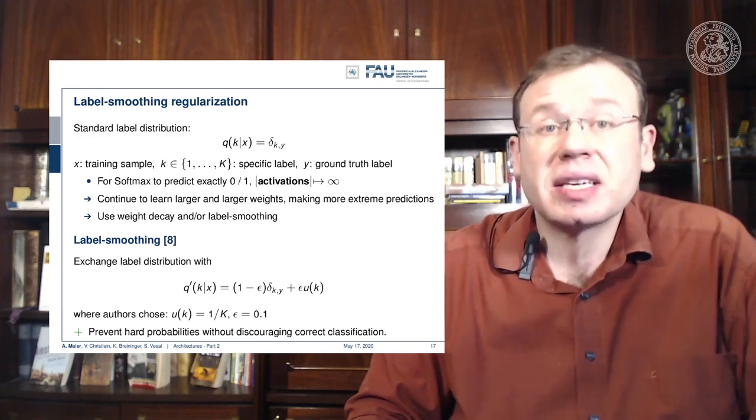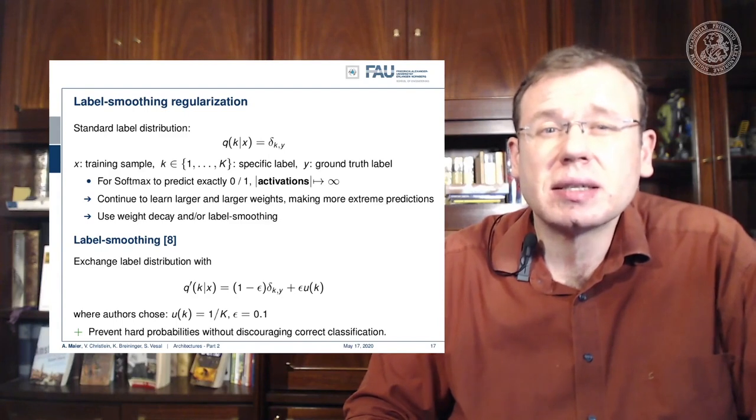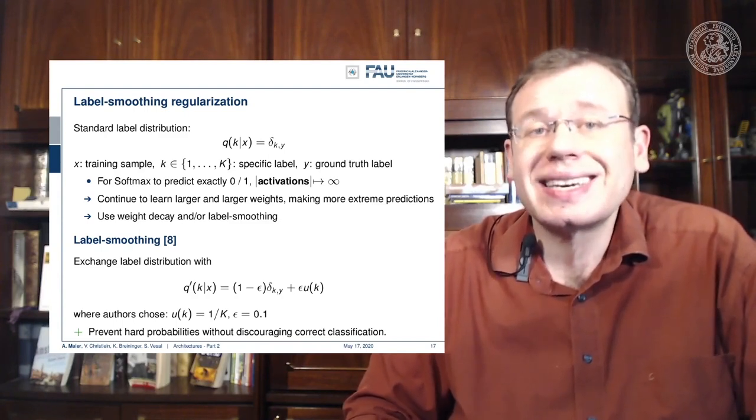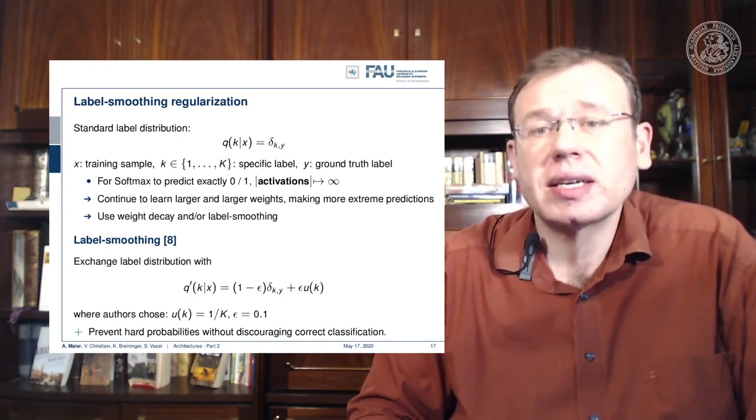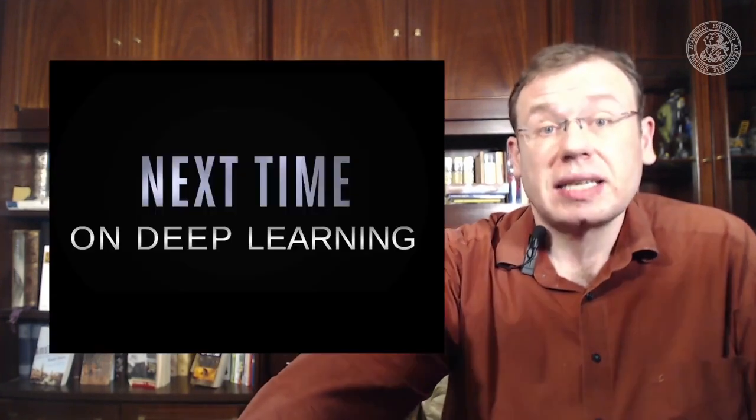The nice thing about this label smoothing is that you essentially discourage very hard decisions, and it really helps in the case of noisy labels. A very nice trick that can help you with building deeper models.